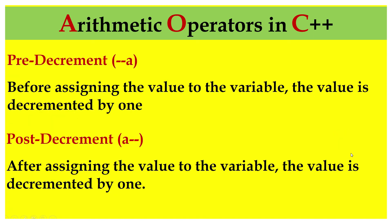Then we have pre-decrement --A and post-decrement A--. Pre-decrement: before assigning the value to a variable, the value is decremented by 1 — first it will get decremented by 1, and then the value will be stored to a variable. Post-decrement: after assigning the value to the variable, the value is decremented by 1 — first assign the value to the variable, then decrement by 1.